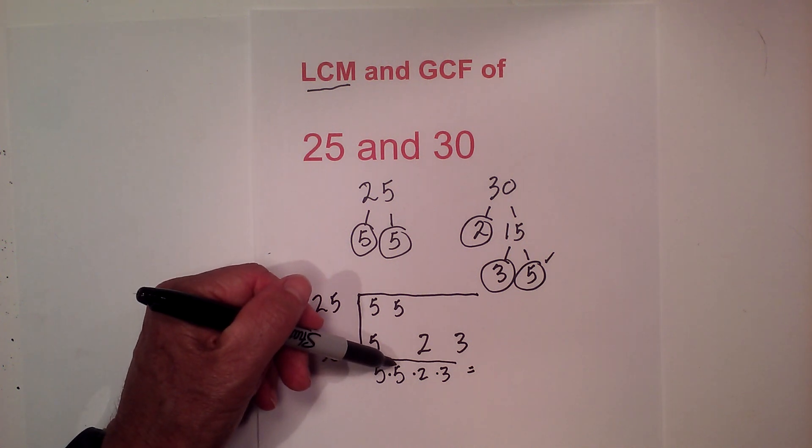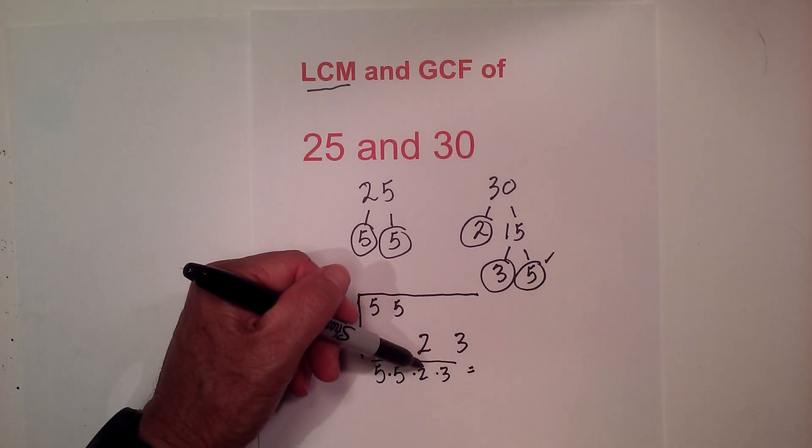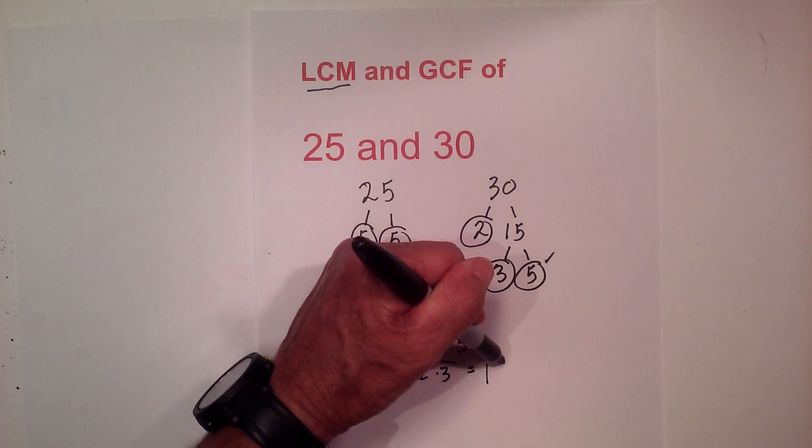5 times 5 is 25, then times 2 is 50. 50 times 3 is 150.